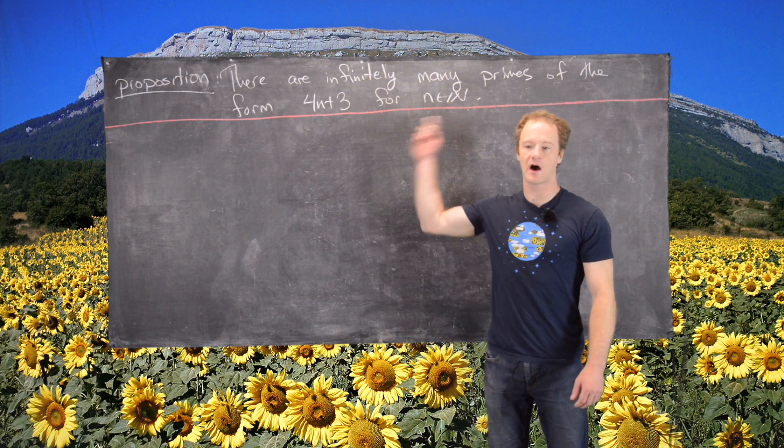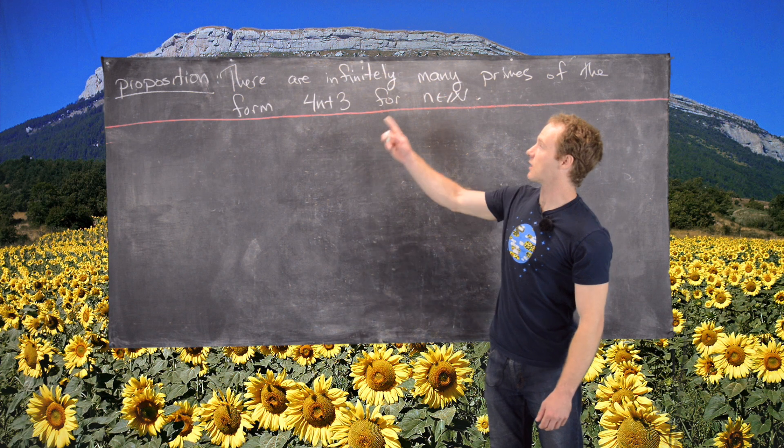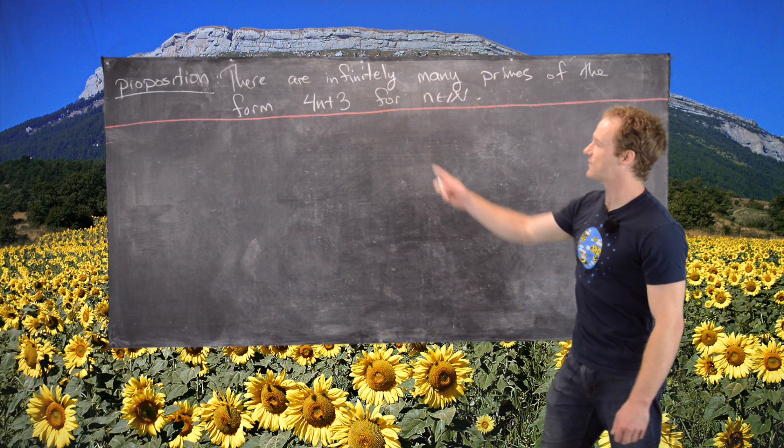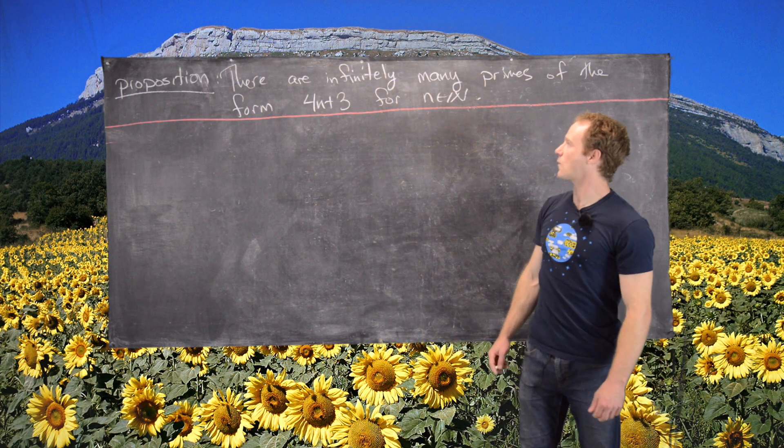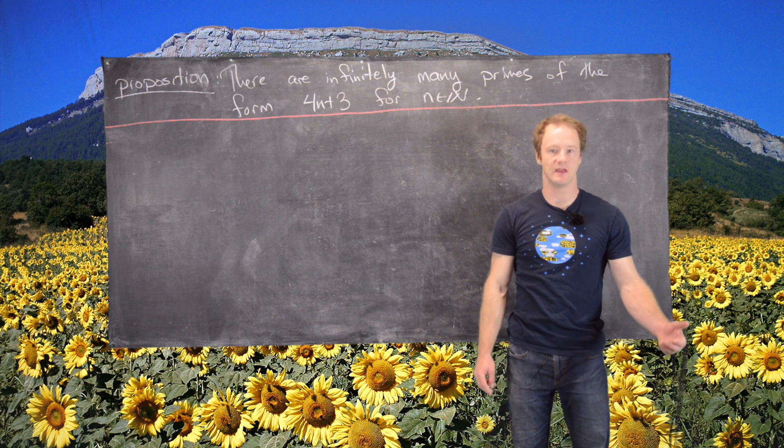In this video we're going to prove the following proposition: there are infinitely many primes of the form 4n plus 3, where n is in the natural numbers.